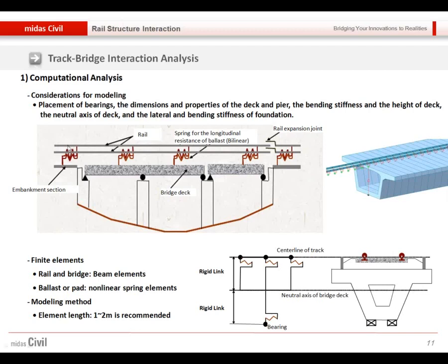Firstly, we will model the rail and deck using the beam elements and we will consider the eccentricity between the rail and deck, considering the rail condition in the field. And then between them, we will connect using the elastic link.